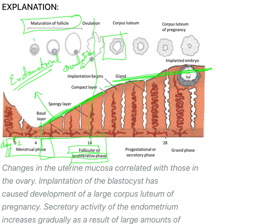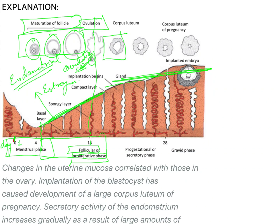The Graafian follicle keeps on maturing until the 14th day of the menstrual period, where the ovum is released. On the 14th day you get ovulation and the ovum is released from the follicle. Until this phase estrogen is generally released, so this phase is rich in estrogen. After the 14th day, with the ovum released, the whole follicle lining forms a vestigial organ — initially known as corpus hemorrhagicum — and later becomes the yellowish corpus luteum.